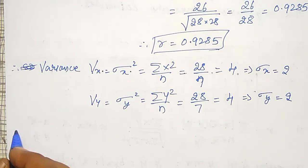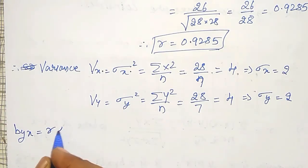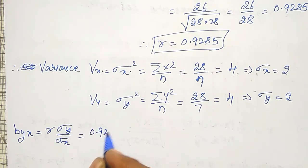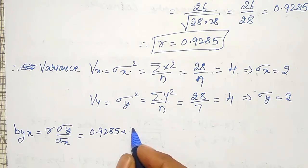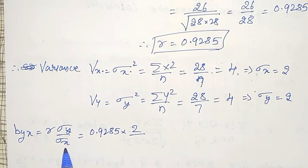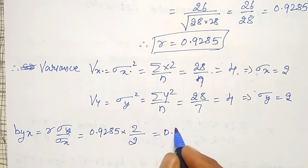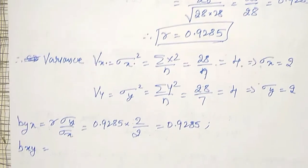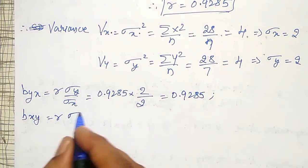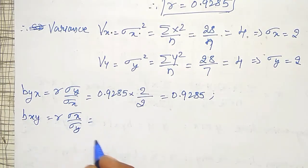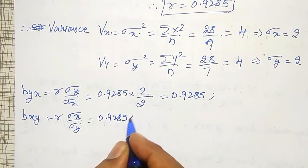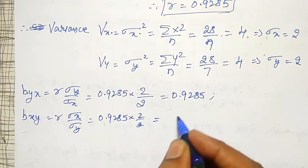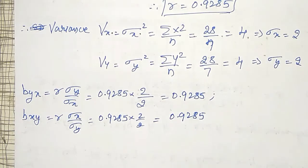Now I will calculate b_yx first. b_yx equals r times σy divided by σx = 0.9285 times 2 divided by 2, so the 2s cancel, giving b_yx = 0.9285. Similarly, b_xy equals r times σx divided by σy = 0.9285 times 2 divided by 2, which is also equal to 0.9285.